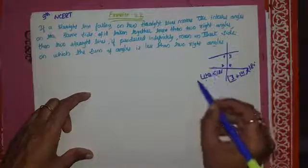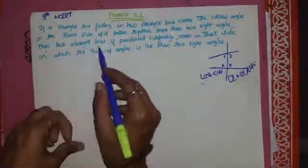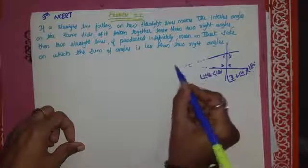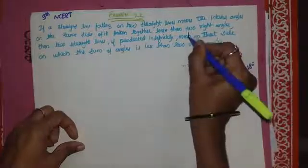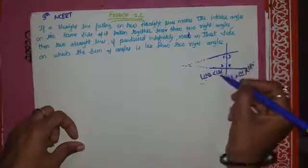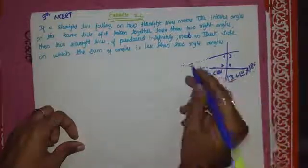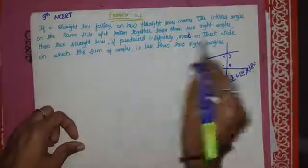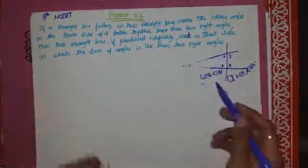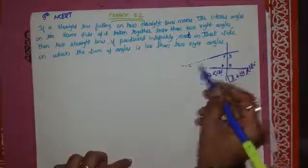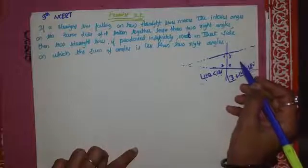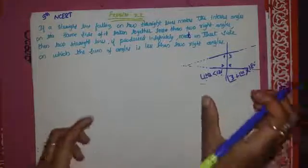Where the interior angles are less than two right angles, if the two straight lines are produced infinitely, they meet on that side — the side on which the sum of angles is less than 180°. If the sum of the angles is greater than two right angles, then the lines cannot meet each other on that side.